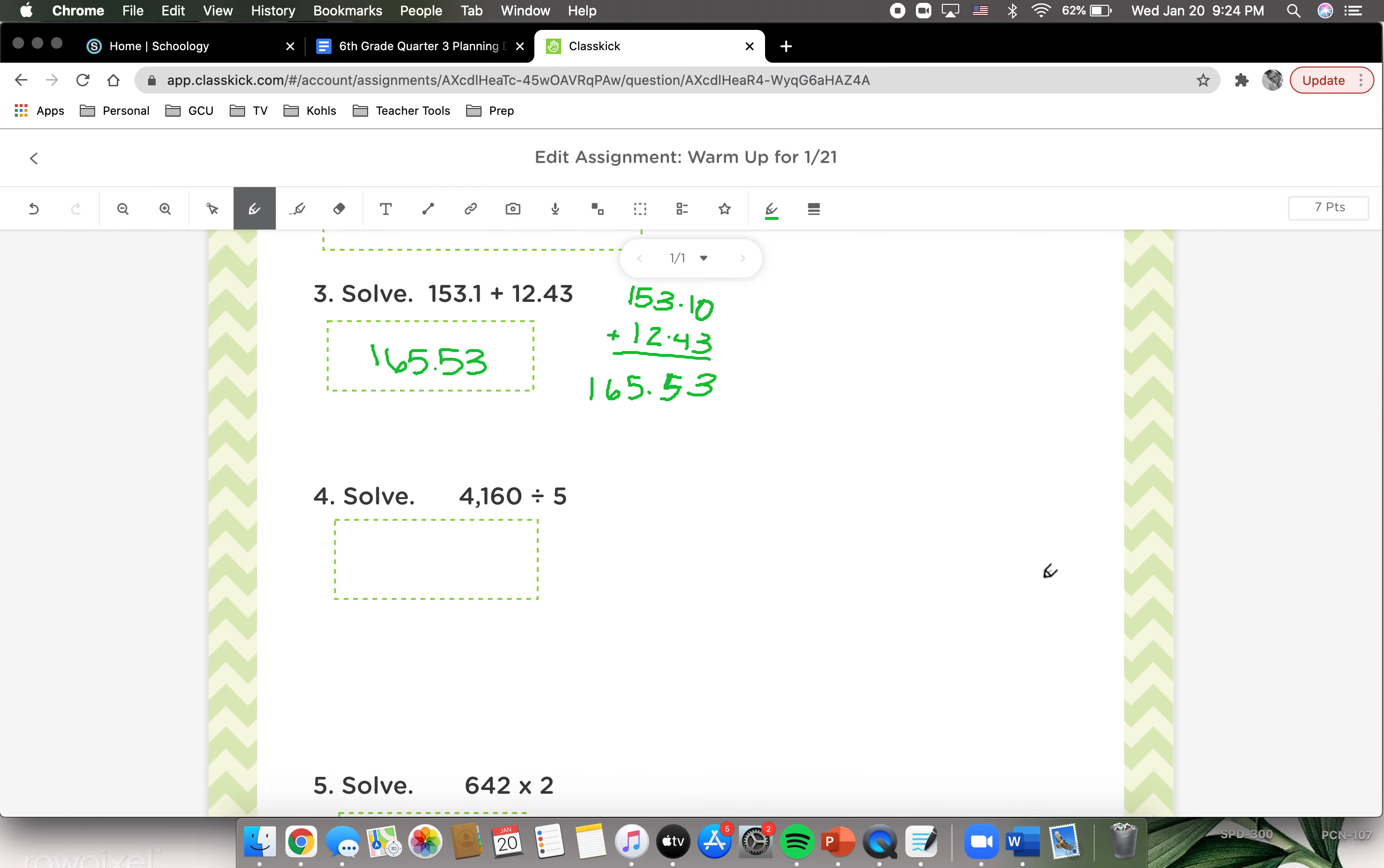Moving on to number four, it says solve. We are going to divide 4,160 by five. Five can't go into four, so we are going to divide five into 41. Five goes into 41 eight times. Five times eight equals 40. 41 minus 40 equals one. We're going to drop down our six, making 16. Five goes into 16 three times. Five times three equals 15. 16 minus 15 equals one. Drop down our zero. Five goes into 10 two times. Two times five equals 10, and 10 minus 10 equals zero. So your answer would be 832.